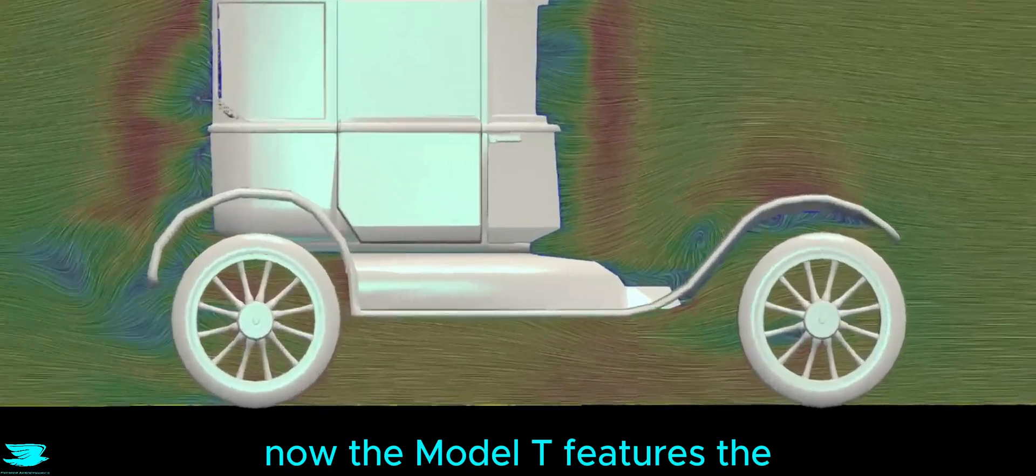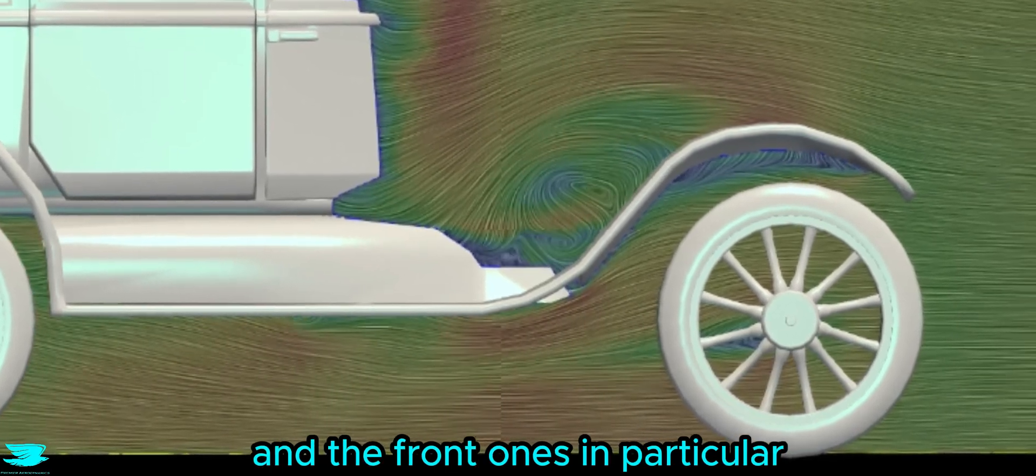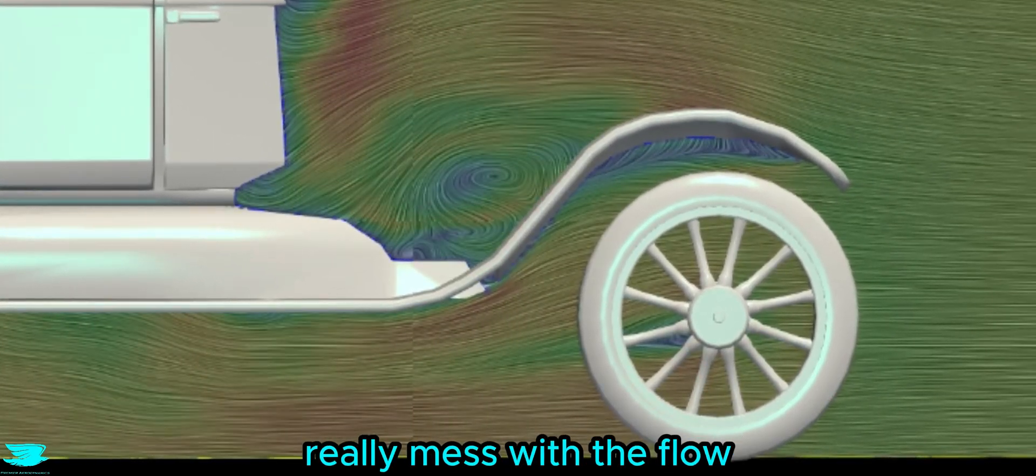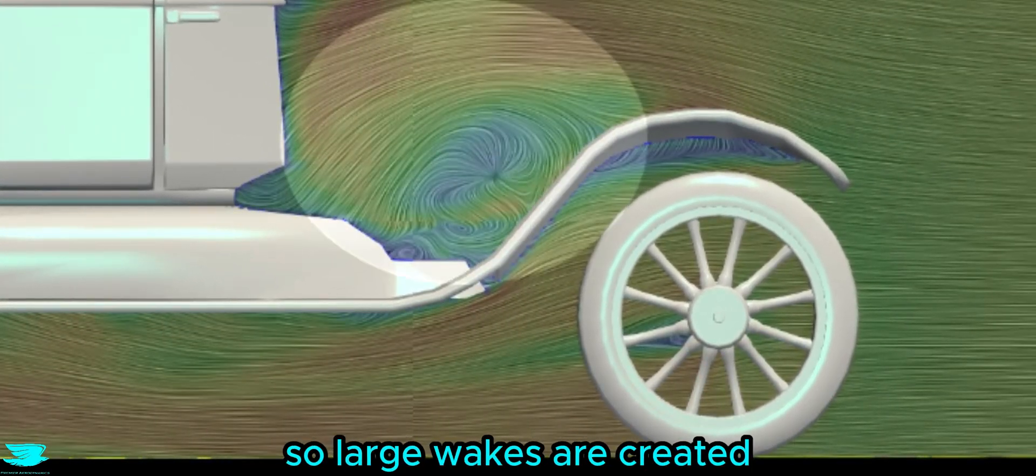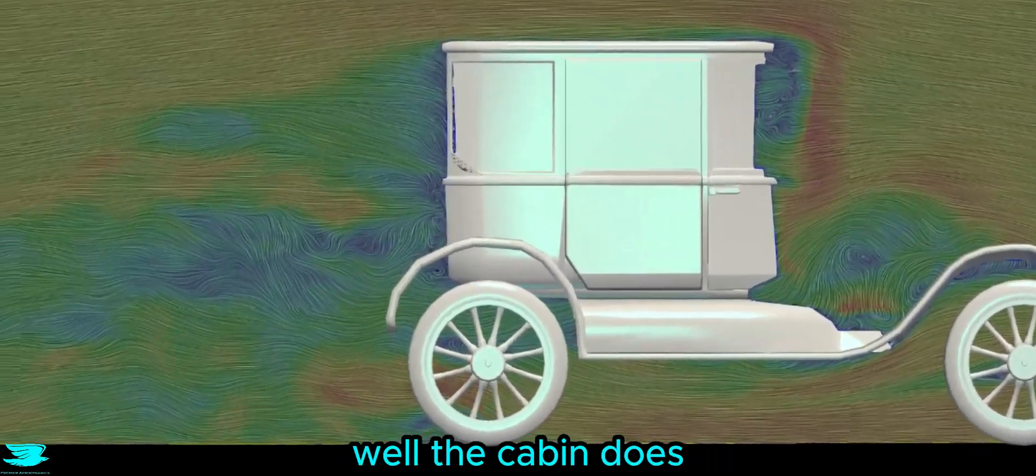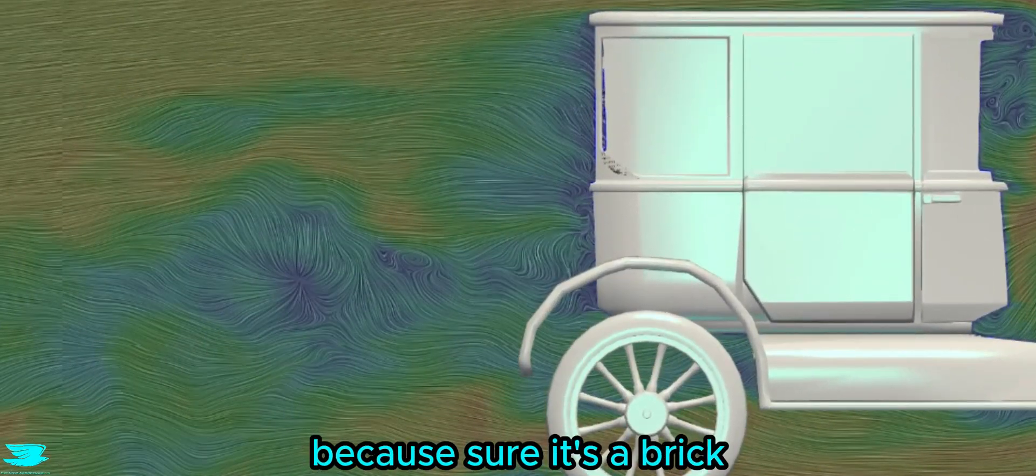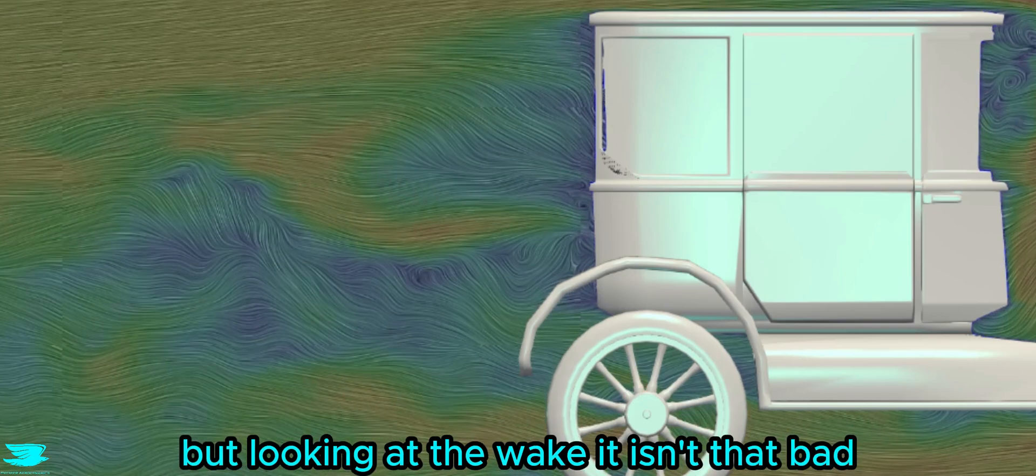Now, the Model T features the old-timey wheel arches, and the front ones in particular really mess with the flow, because it doesn't stay attached, so large wakes are created and travel downstream over the cabin. But again, I am quite impressed with how well the cabin does, because sure, it's a brick, but looking at the wake, it isn't that bad.